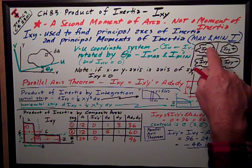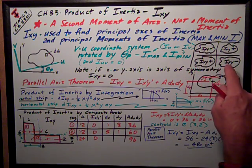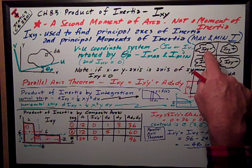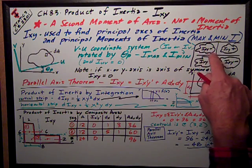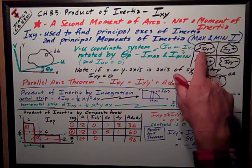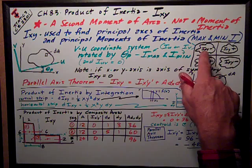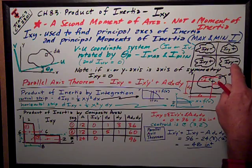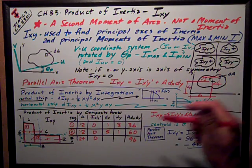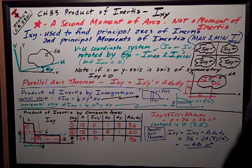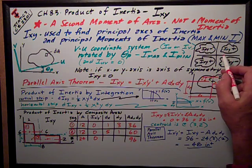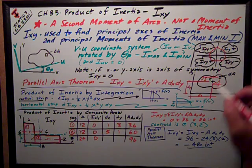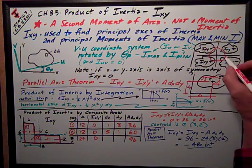If the whole area lies in the second or the fourth quadrant, then either X is positive and Y is negative, or Y is positive and X is negative. And so IXY, the product of inertia, is negative. If the area crosses over like that, then I can't say anything for sure about the sign of IXY.